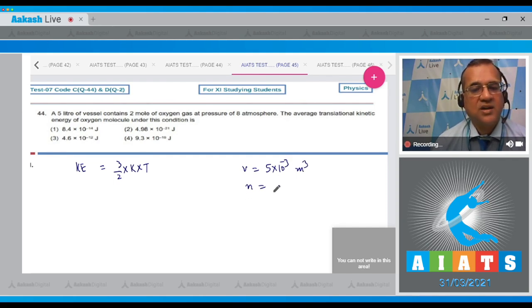The number of moles it contains is 2, and the pressure is given as eight atmospheres. One atmosphere is approximately this, so this is the pressure given. How will you find the temperature? Using gas equation PV = nRT, therefore T = PV/(nR).